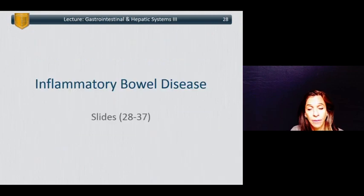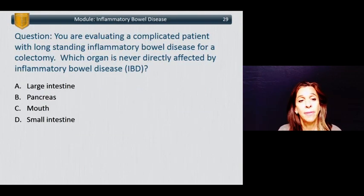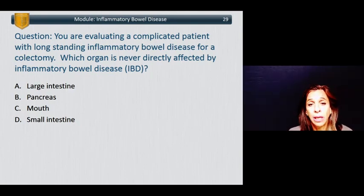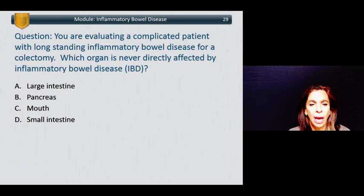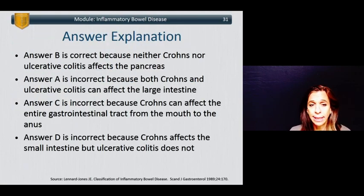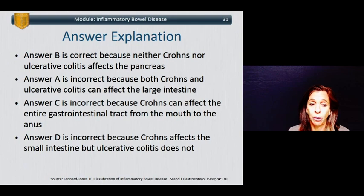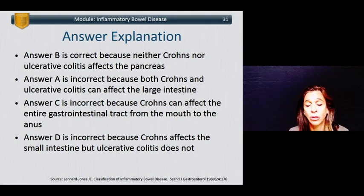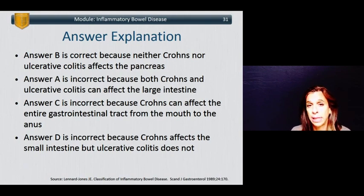Let's talk about inflammatory bowel disease. You are evaluating a complicated patient with longstanding inflammatory bowel disease for a colectomy. Which organ is never directly affected by IBD? A: the large intestine, B: the pancreas, C: the mouth, or D: the small intestine? The answer is B — the pancreas — because neither Crohn's nor ulcerative colitis affects the pancreas. Answer A is incorrect because both conditions can affect the large intestine. Answer C is incorrect because Crohn's can affect the entire GI tract from mouth to anus. And answer D is incorrect because Crohn's affects the small intestine, though ulcerative colitis does not.